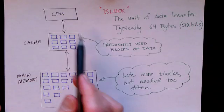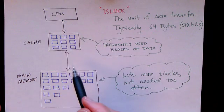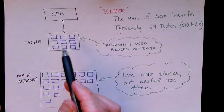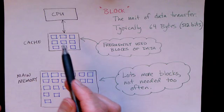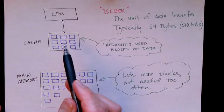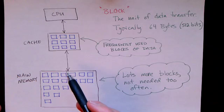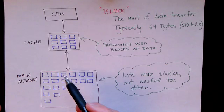Now when the CPU wants something from memory, it has to ask the cache, and the cache may have that data in one of the blocks that it's storing or it may not. If the cache doesn't have it, it will have to go to main memory and retrieve the block.